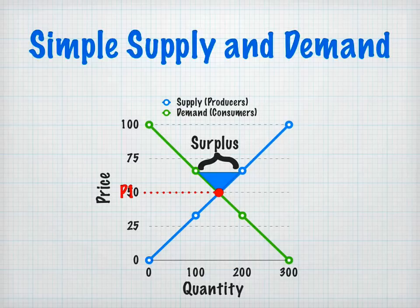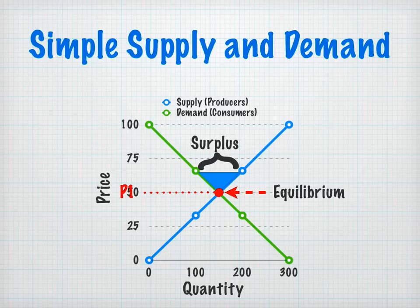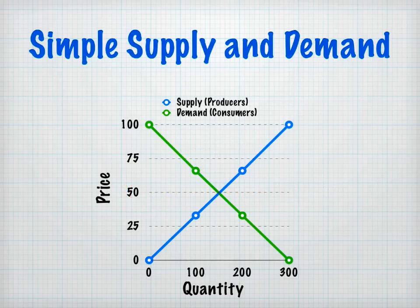And that brings us to a point we call equilibrium. Here at market price $50, if that price was lowered, you'd see that producers are willing to make 150 Xbox 360 games, and consumers are willing to buy 150 Xbox 360 games at $50. That brings us to a state of equilibrium, and that gets rid of the surplus.